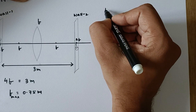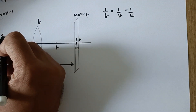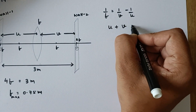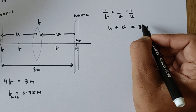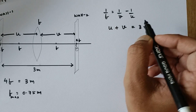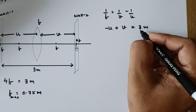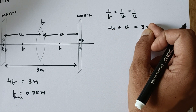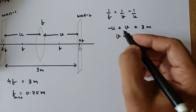Now there is another way — the differential method. We know that 1/f = 1/v − 1/u. This distance is u, this distance is v, and u plus v has to be kept as 3 meters. We need to use sign conventions here because numbers are given. If no numbers were given, we would not use sign conventions. So u becomes negative, and v is equal to u plus 3.